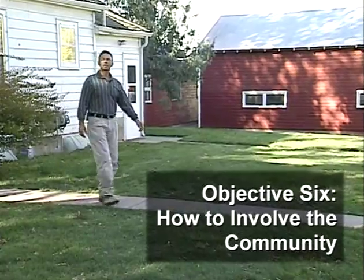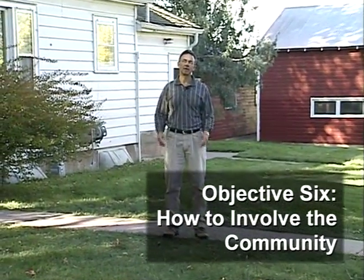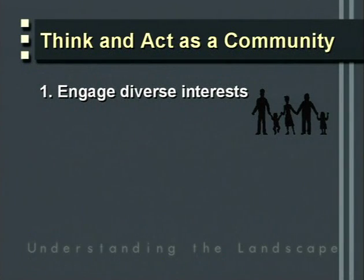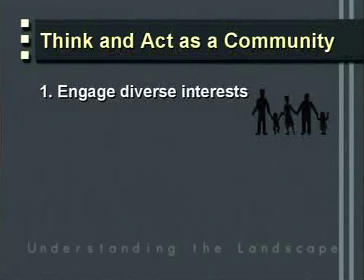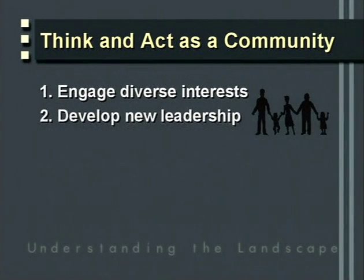Now that we're working together as organizations, objective six is to think about how we can involve the community. If we're going to work with the community, our first need is to think like a community — to represent the kind of diversity that exists within it. If we engage those diverse interests, our chances of addressing the modern local issues will be much greater. We also need to develop new leadership — working with new people means there are also new leaders to engage.